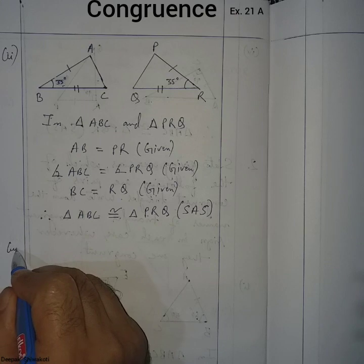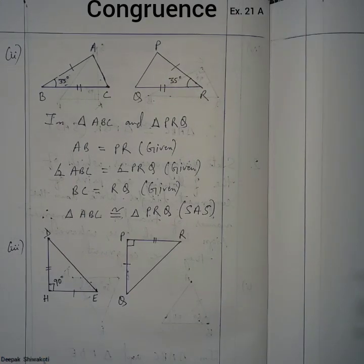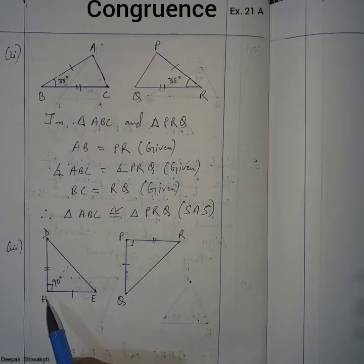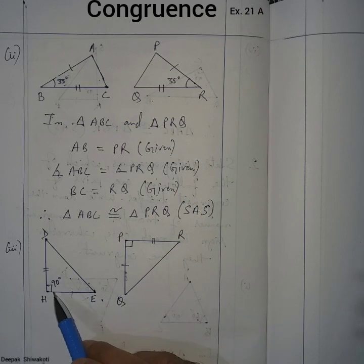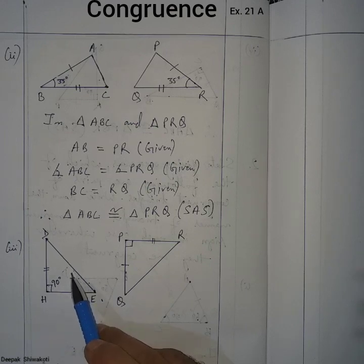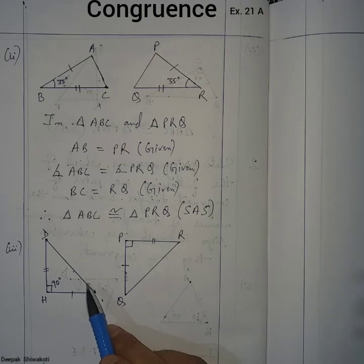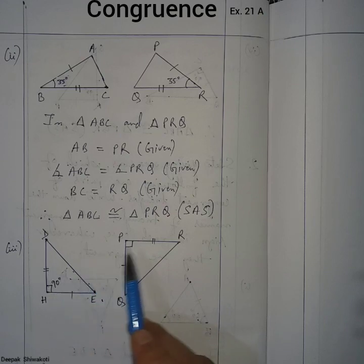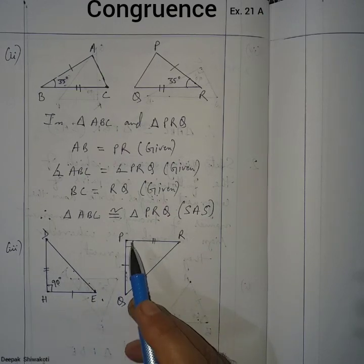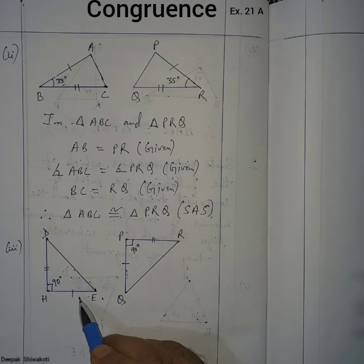Next is question number 3. In this figure we have triangle DHE and triangle RPQ. The 90-degree angle is given. Opposite to the 90-degree angle is the hypotenuse, but no information about the hypotenuse is given in either triangle. However, three other pieces of information are given: two sides and the included angle.